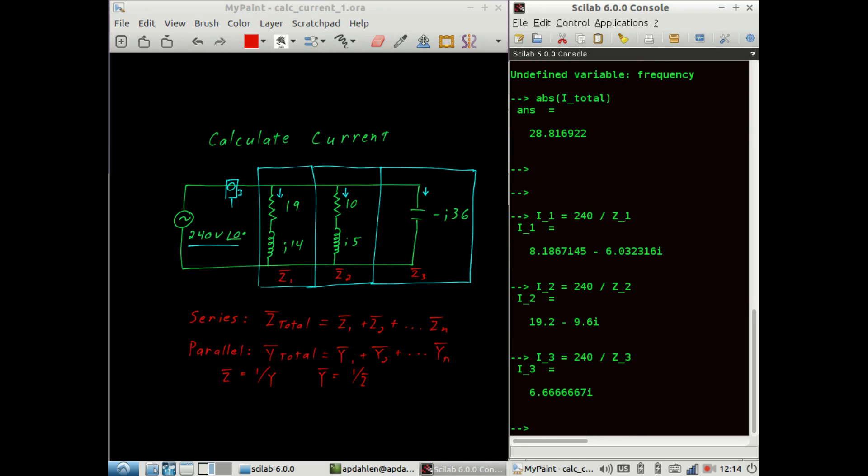And then we could say that the total current is equal to the sum of the currents. And we'll take the absolute value. And there we are at 29 amps again.